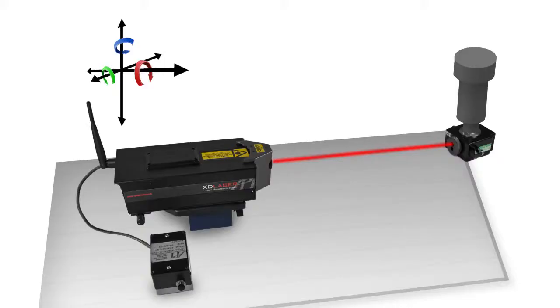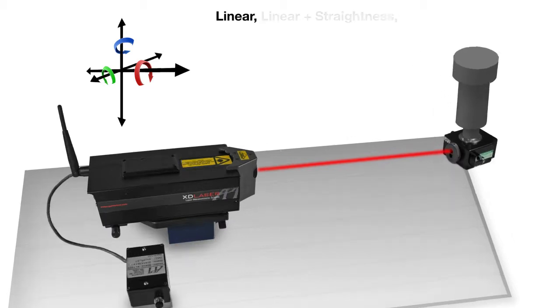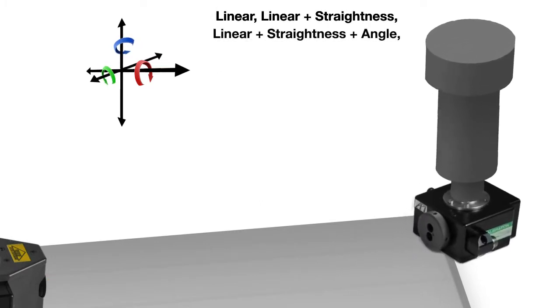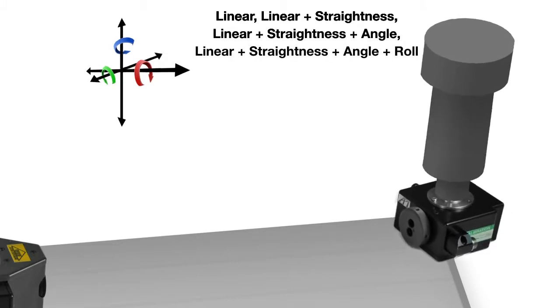The XD Laser is available in four different models, dependent on your measurement needs. The XD1 measures the position of your machine. The XD3 measures straightness. The XD5 measures pitch and yaw, while the XD6 measures roll.